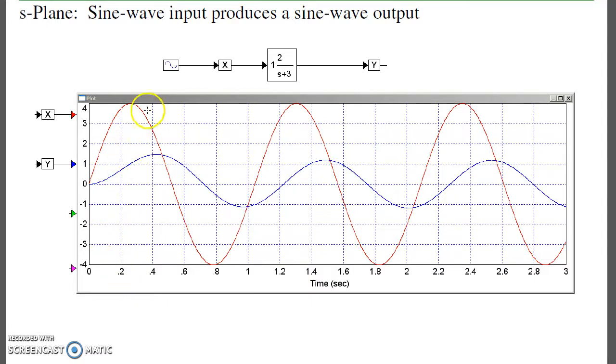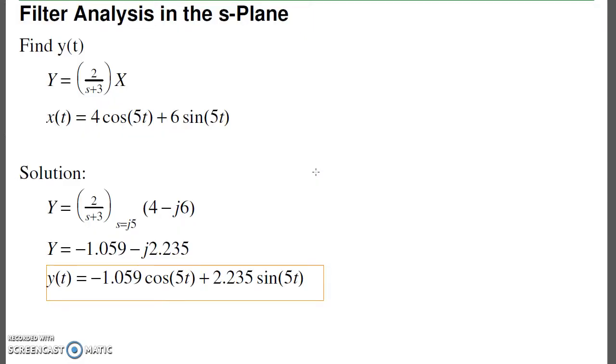If I take a filter and apply a sine wave input (the red line), I get a sine wave out. There's a change in amplitude and a change in time delay. The blue line is just the graphical version of that y(t).